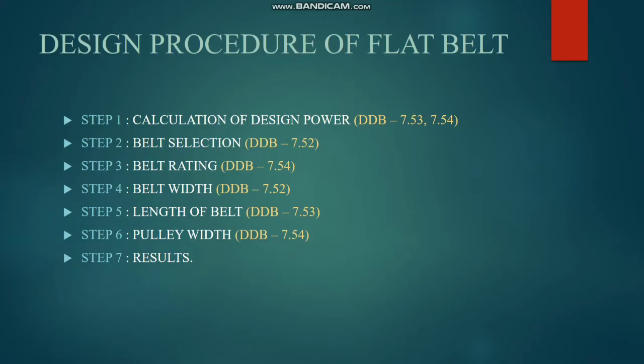Hi students, I am going to design a flat belt. Flat belt is Unit 1 — design of power transmission systems. Flexible elements are Unit 1. The flexible elements are flat belt, V-belt, chain drive, and wire rope. These are 4 methods. First one is flat belt.